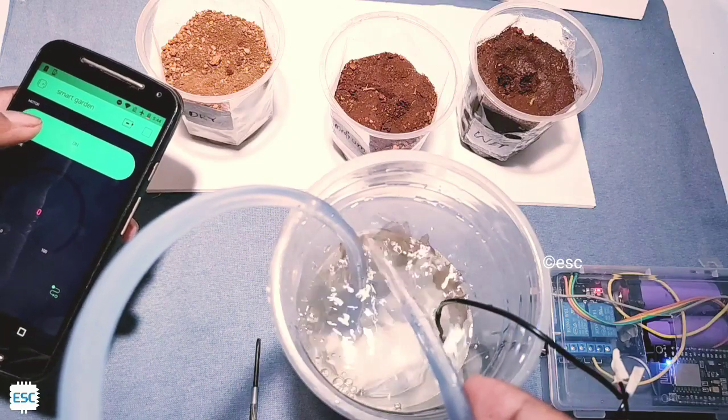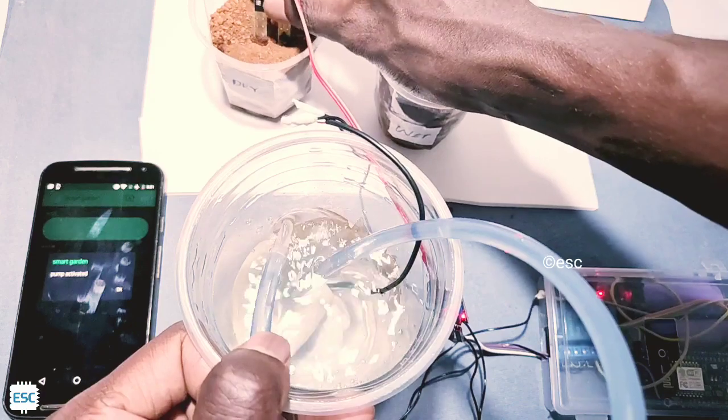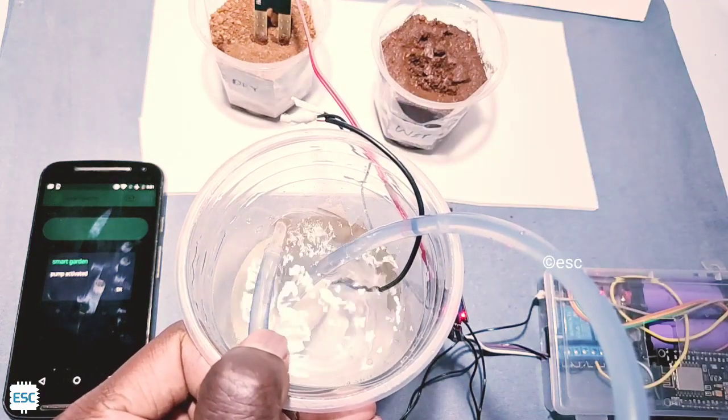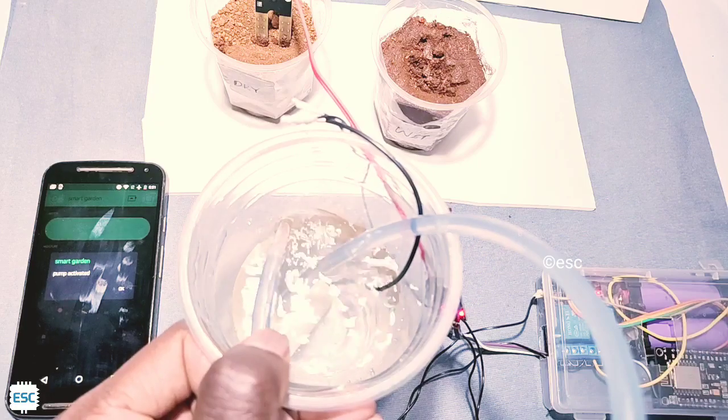Now you can see when I tap the on button in the app, you can see the pump is working. And also you can see when I place the probe in the dry soil, the motor is working. So when I place the probe in wet soil, the pump gets deactivated.